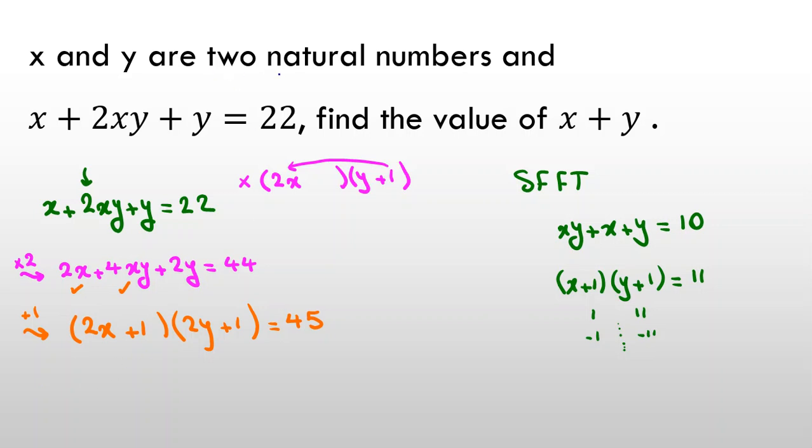It says x and y are two natural numbers. So, because we know they are natural, x is at least 1. So each of them will be at least 3. So if I check the cases, 45 is 9 times 5, 3 times 3 times 5.